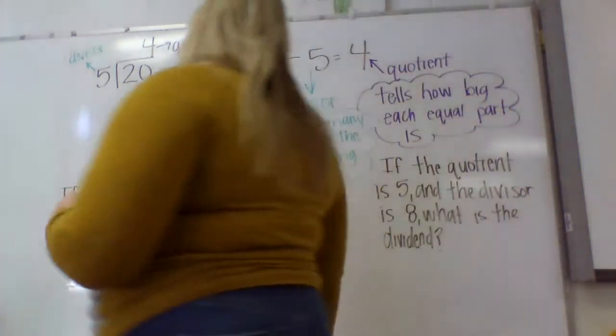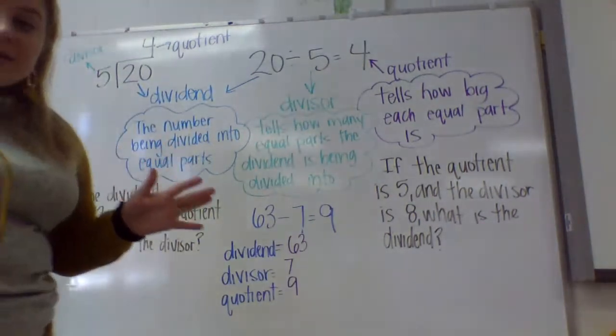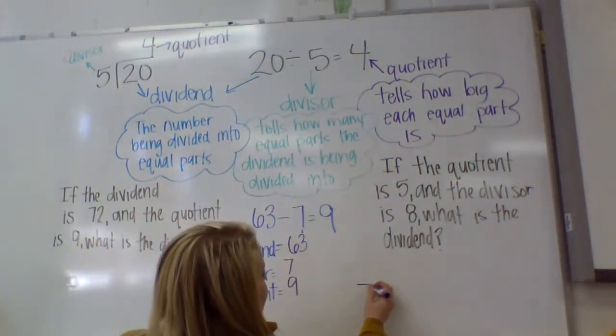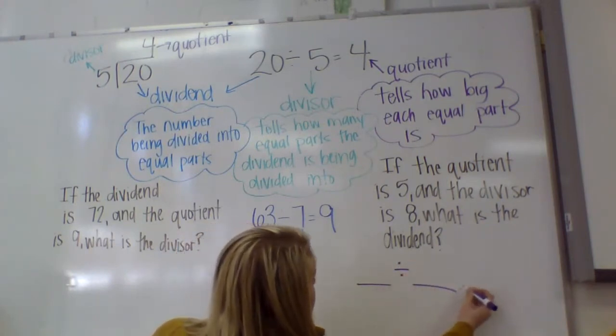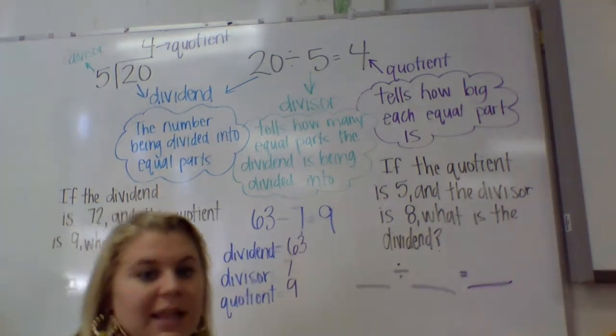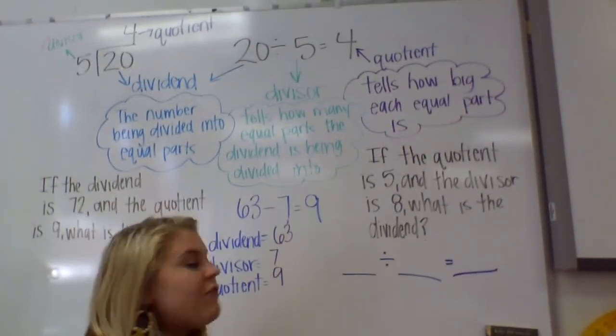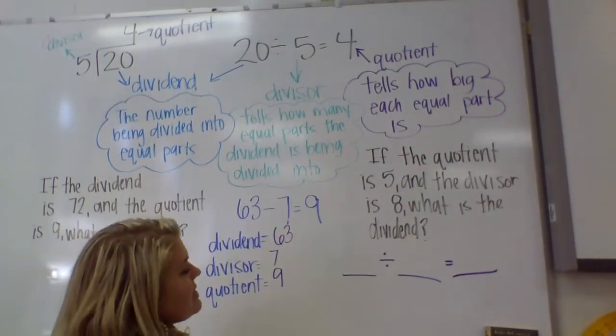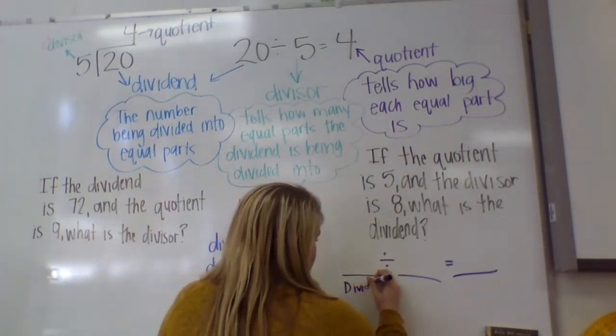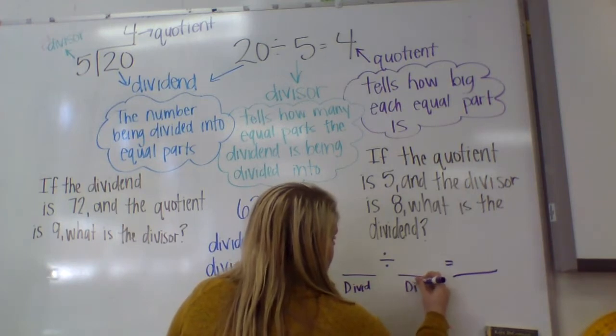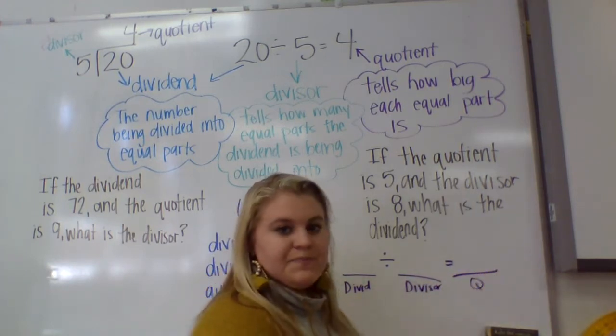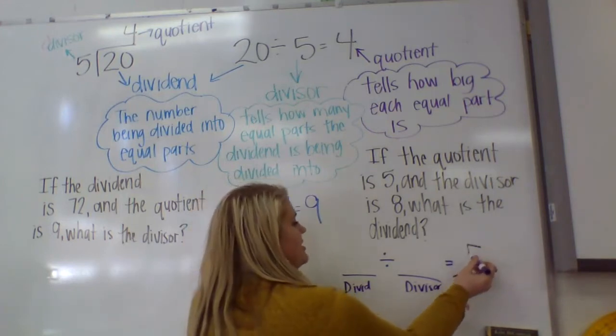What I would suggest doing on the next ones, we've got some riddles. I would always set it up. If you're being asked to identify quotient, dividend, and divisor, I would set up your problems like this. So we have, if the quotient is 5, so remember we have dividend, divisor, quotient.